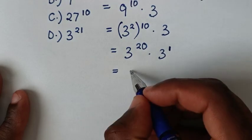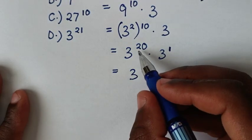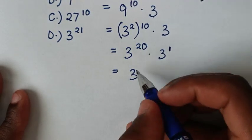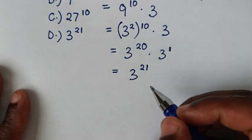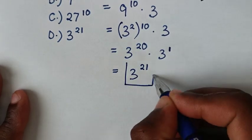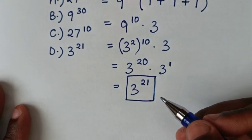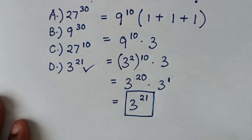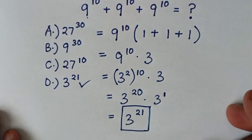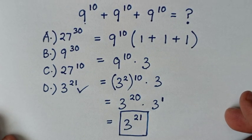It will be equal to the same base of 3, then we add the powers: 20 + 1 is 21. Therefore, this is our final answer, 3^21, which is D.